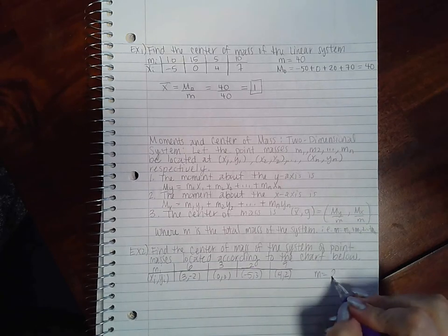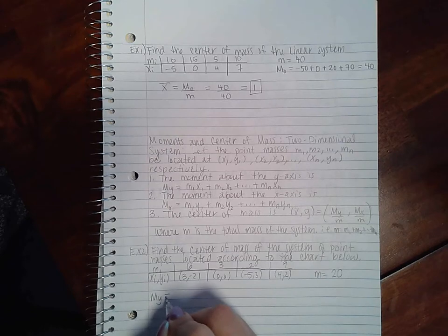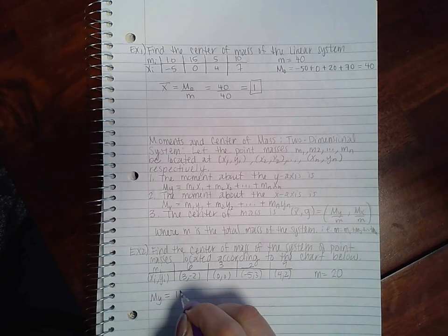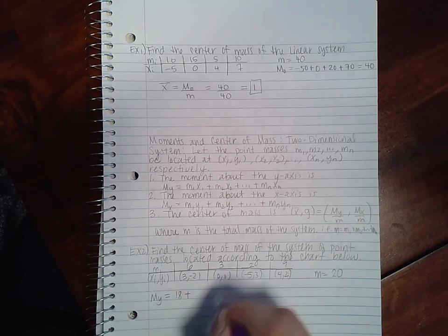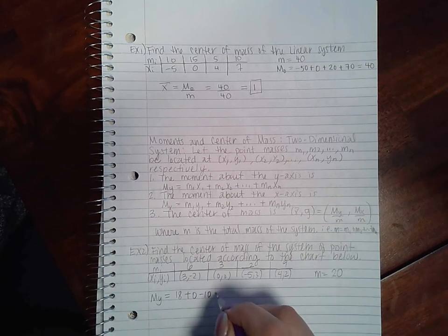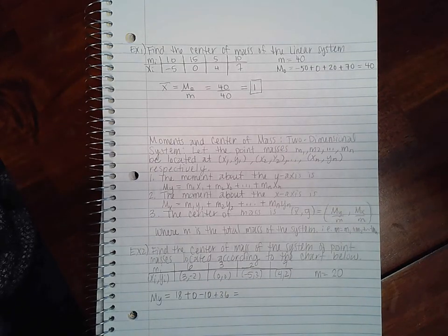If I want to find my moment of y, I'm going to take my mass and multiply it by my x values. So I get 18 here, I get 0 here, I get negative 10, and here I get 36. If I add all of those up together, I get 44.